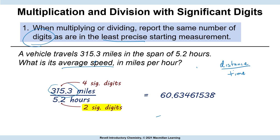When you punch this in on your calculator, you're going to get more than two digits, so we round to two. The general simple rule is round 0.5 and higher up, 0.4 and lower round down. Since this is 0.6, we round up and end up with 61 miles per hour. When multiplying and dividing, look for the fewest number of digits in any of your measurements — that's what you express your answer to.